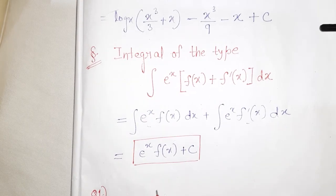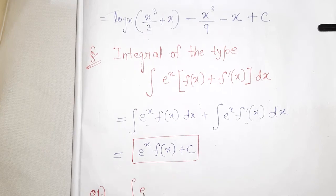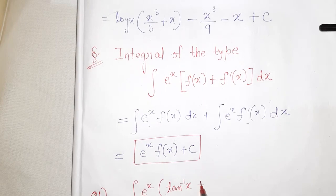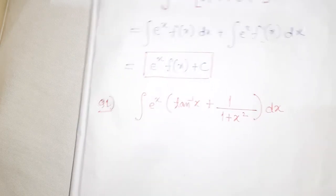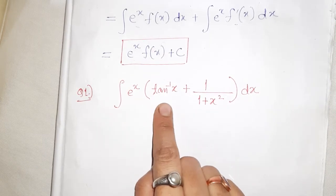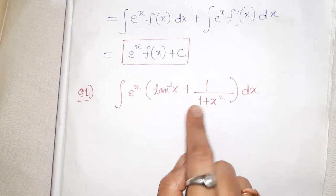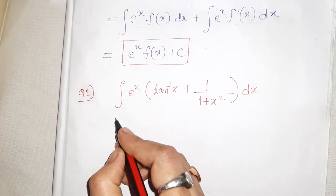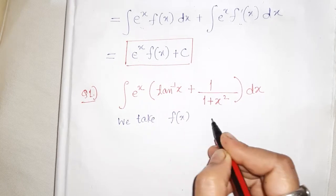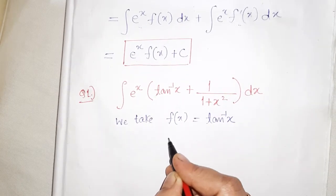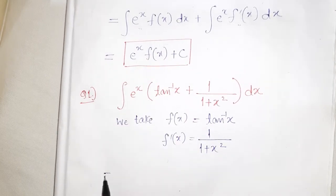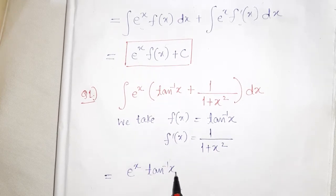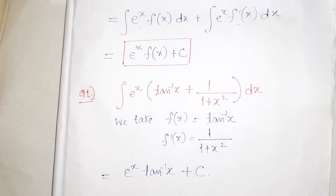For example, if you have integration of eˣ (tan⁻¹x + 1/(1+x²)) dx — if you take tan⁻¹x as f(x), its differentiation is 1/(1+x²), which matches f′(x) here. So we take f(x) equals tan⁻¹x and f′(x) equals 1/(1+x²). Using the direct formula, the result is eˣ tan⁻¹x plus c. You could also do this by parts, but it would be longer; this direct formula is easier.